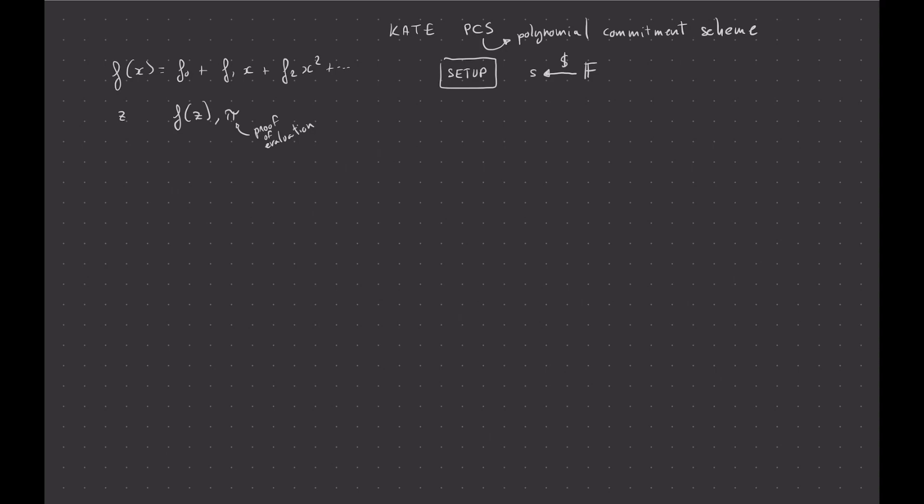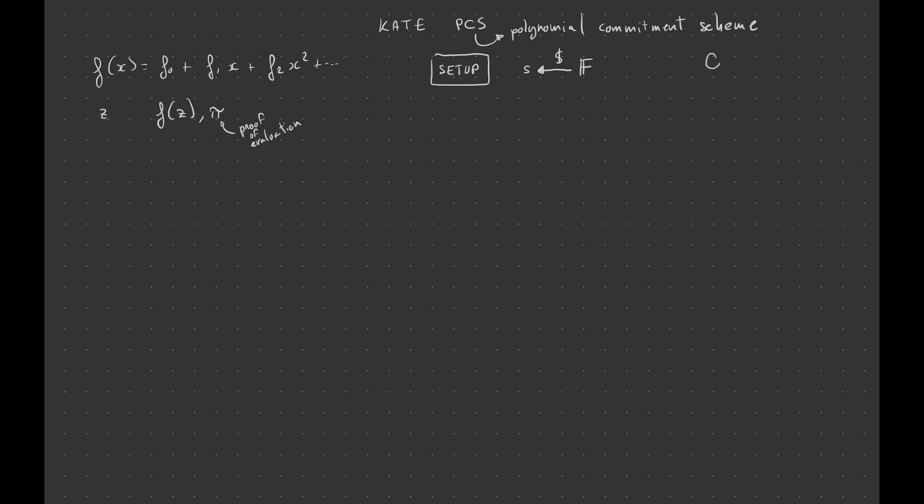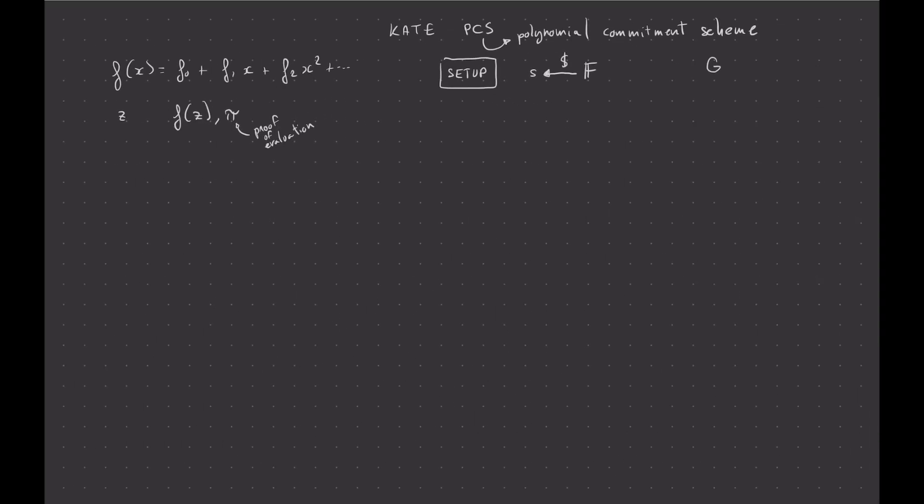So let's say that you have a curve generated by some point G, and the curve it generates is of order p, prime p. So your field is pretty much the field created by this prime p here. So anyway, first step is to generate these random elements.